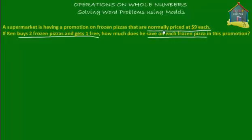What's given to us is that the cost of each pizza is $9 — that's the normal price. In the promotion, if you buy two frozen pizzas, you can get one for free. Some people also call this 'get three for the price of two.' What this essentially means is that if you buy two pizzas, you can get one for free, so you will come out of the supermarket with three frozen pizzas.